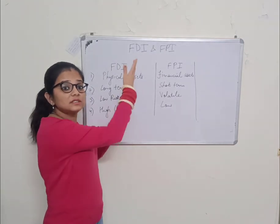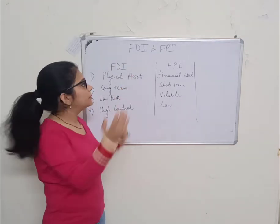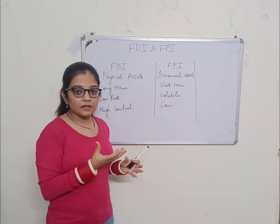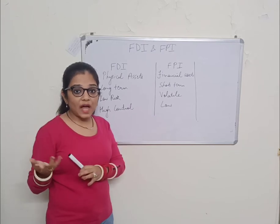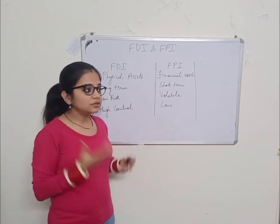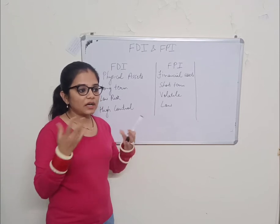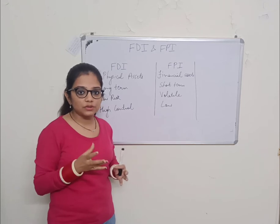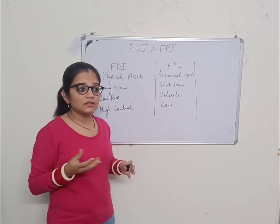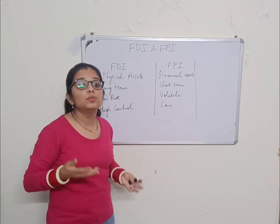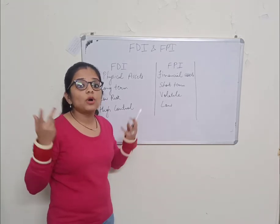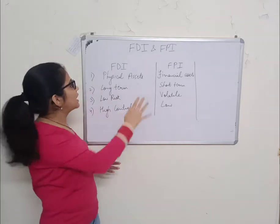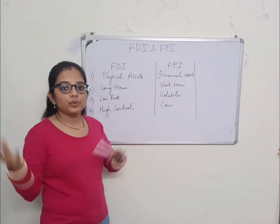What is the difference between them? Every country needs capital — it needs money for economic growth and development. Imagine a situation where a country has used all its domestic and internal sources but still the capital requirement is not fulfilled. It needs more money. In that case, the country has two options: FDI and FPI, through which it can fulfill its capital requirements.